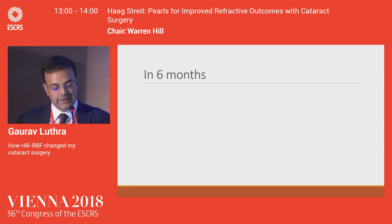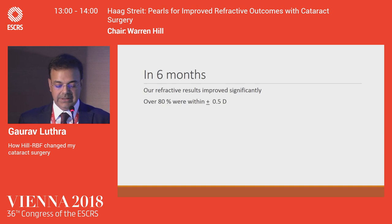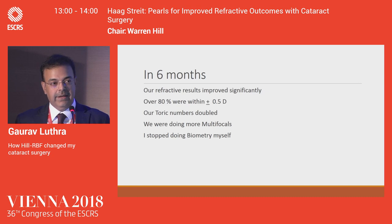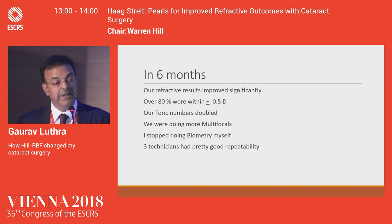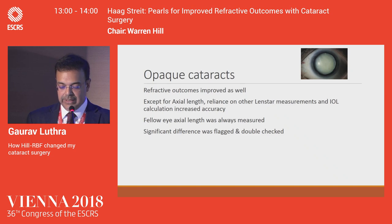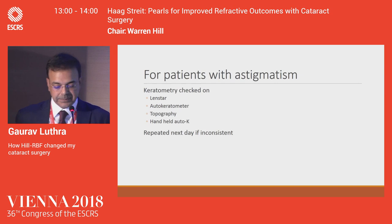In six months we started seeing changes: our refractive results improved significantly. Almost 80% of patients were now within plus or minus half a diopter — a big satisfaction. Our toric numbers almost doubled within six months because we were more confident with our keratometries. We started doing a few more multifocals every month. Until then I was so fussy with biometries, repeating almost as many as I could. Now suddenly my technicians were doing it well, and I found it no longer necessary to do biometries on my own. Even for opaque cataracts, our outcomes improved drastically. Except for axial length, we were doing all other measurements on the LENSTAR, and we could immediately see outliers by comparing both eyes.